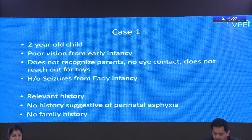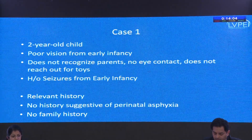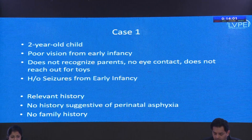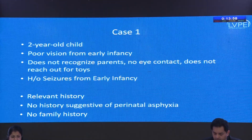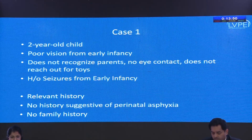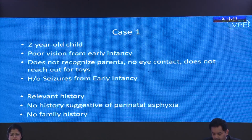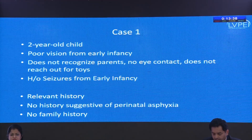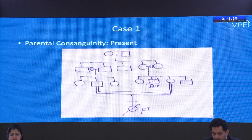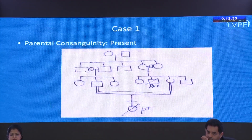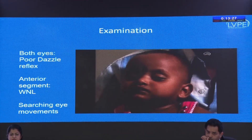I'll begin with the first case: a two-year-old child brought to us with complaints of poor vision from early infancy. The history included not recognizing parents, no eye contact, not reaching out for toys, and bright lights. Importantly, there was a history of seizures from early infancy. There was no history suggestive of perinatal asphyxia and no significant family history of similar disease, but the parents were related as first-degree cousins — a consanguineous marriage.